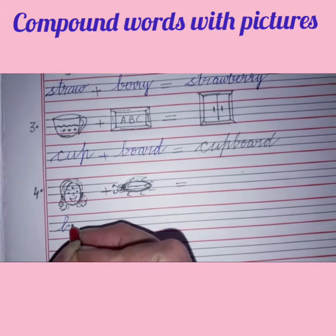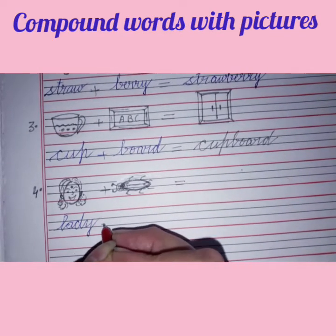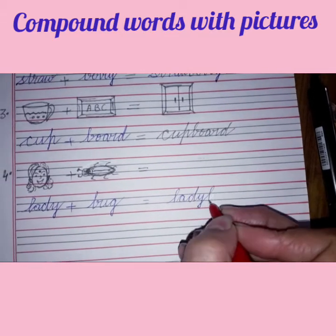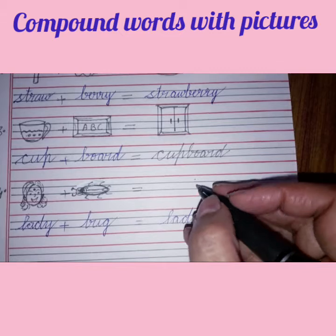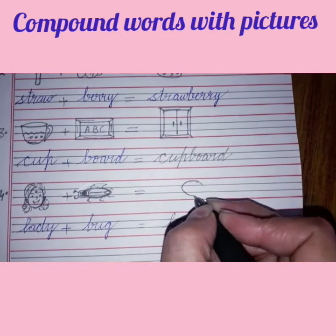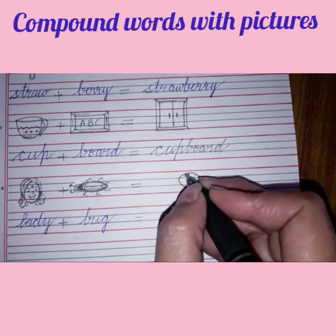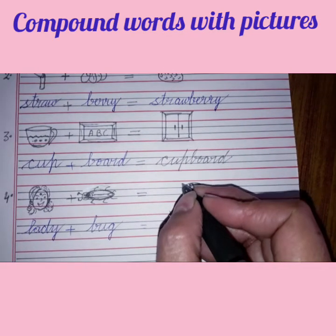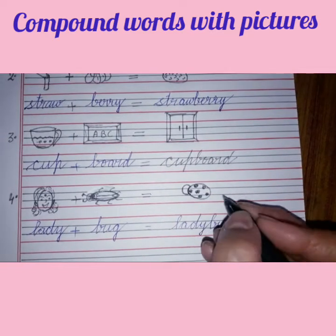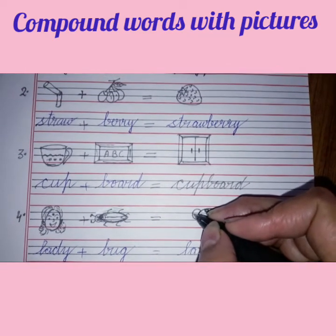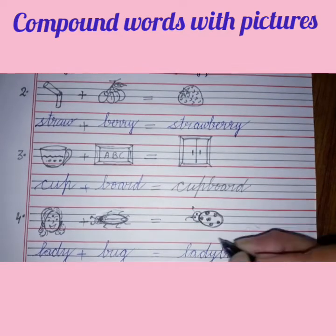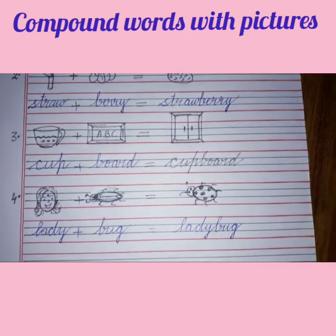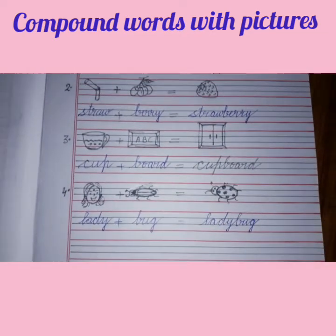Lady: L-A-D-Y, plus bug: B-U-G, equals ladybug. To draw a ladybug: first draw an oval shape like an egg, then add black dots inside it, draw a half circle on top, make eyes and antennas, and add six legs — all bugs have six legs. I have made a ladybug here.